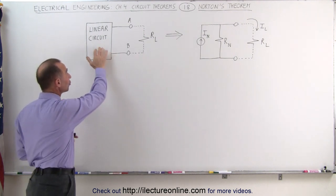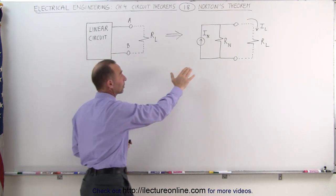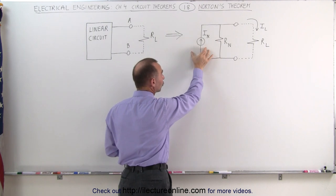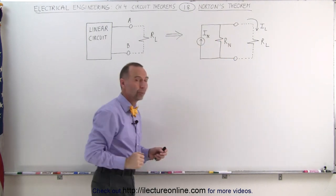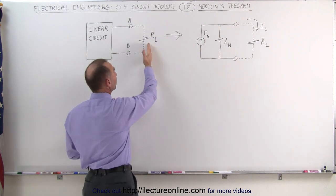Norton's Theorem claims that we can take a linear circuit and convert it to a circuit that contains a single current source and a single resistor in parallel to the current source. We can then connect some load resistor onto that.